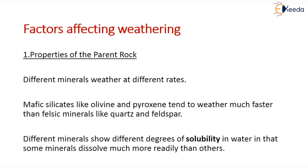The first factor is the properties of the parent rock. Different minerals will weather at different rates because there is no standard time for all minerals to weather. For example, mafic silicates — olivine and pyroxene — will tend to weather much faster when compared to felsic minerals like quartz and feldspar. This is an example of different minerals weathering at different rates.